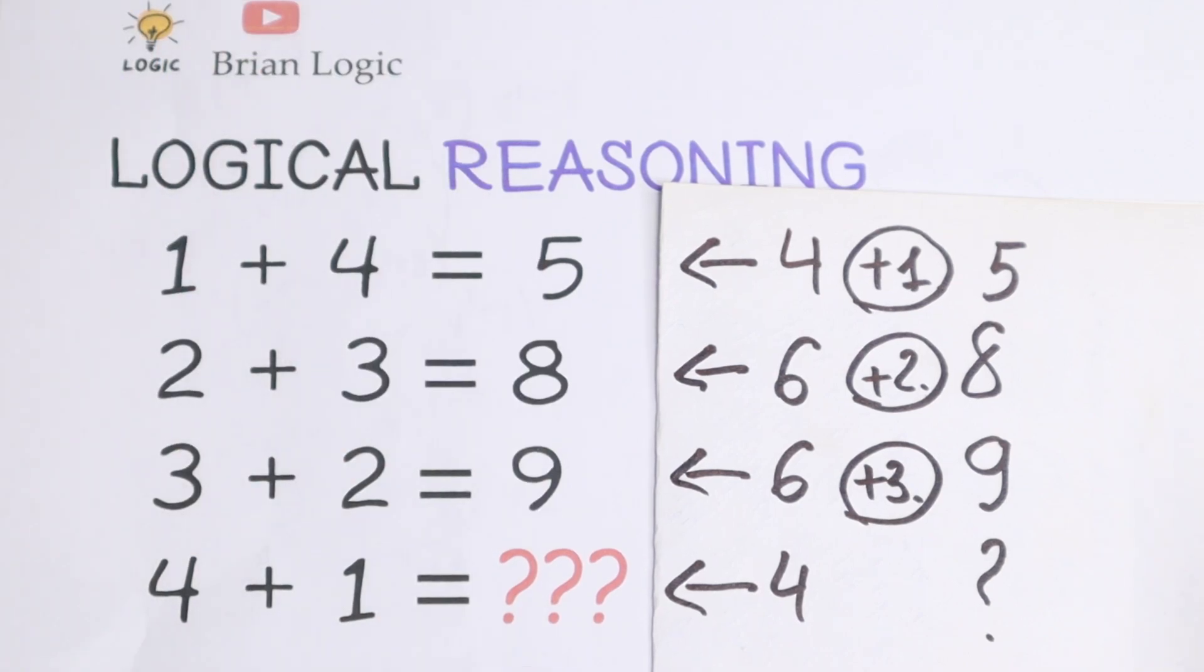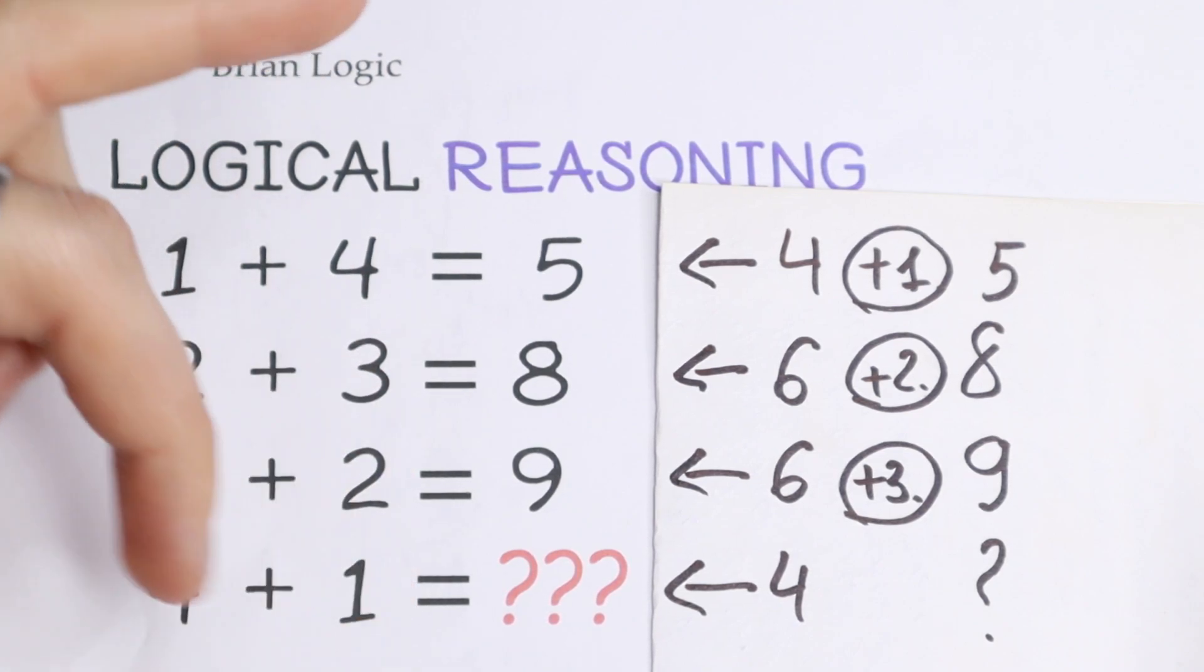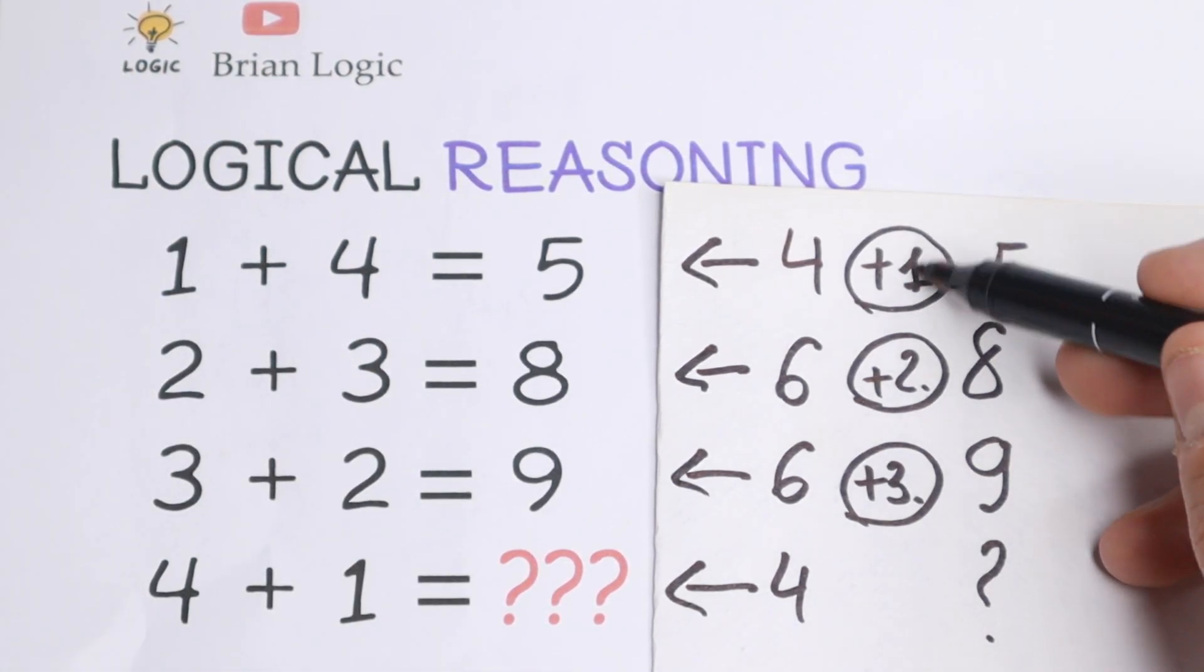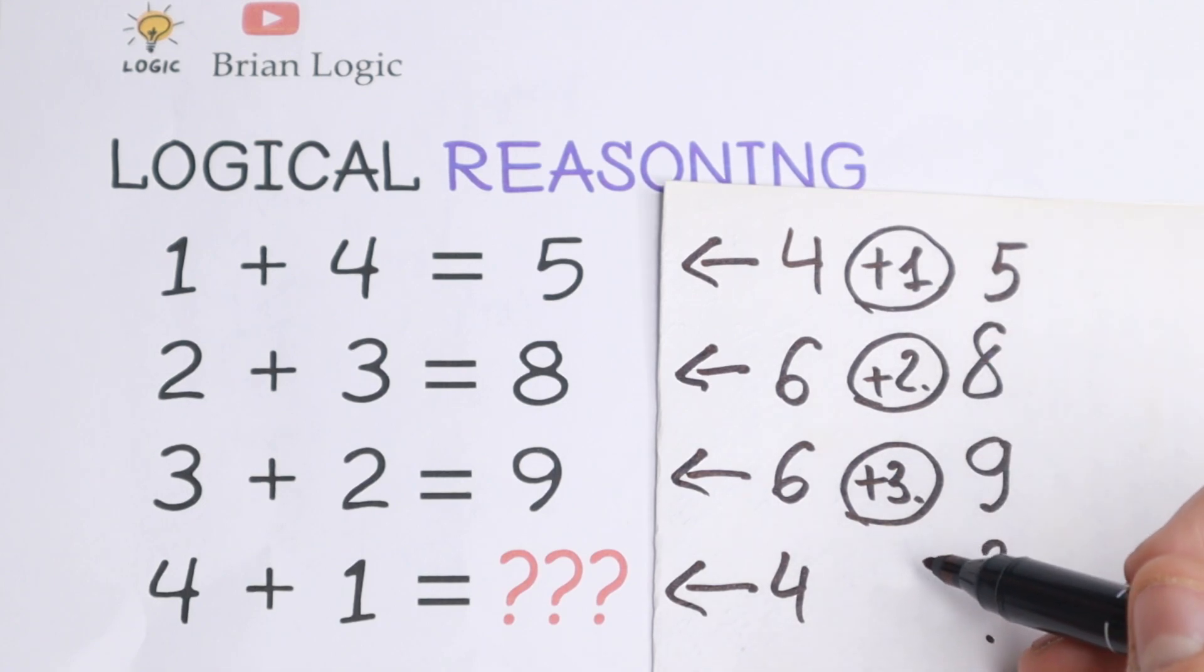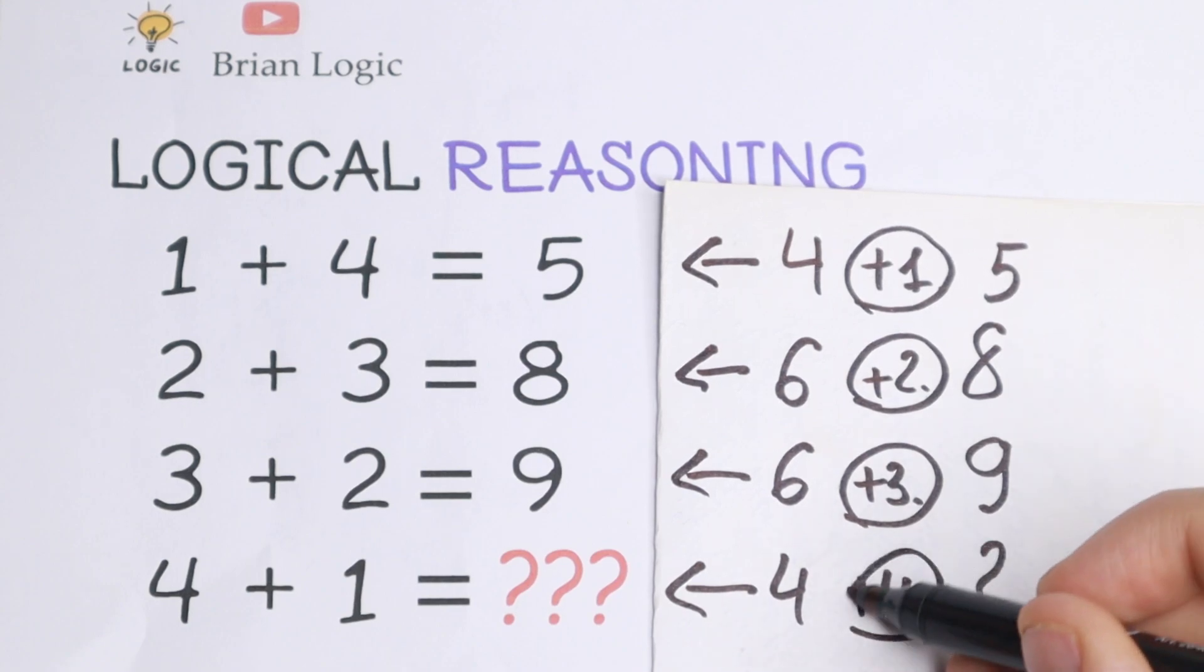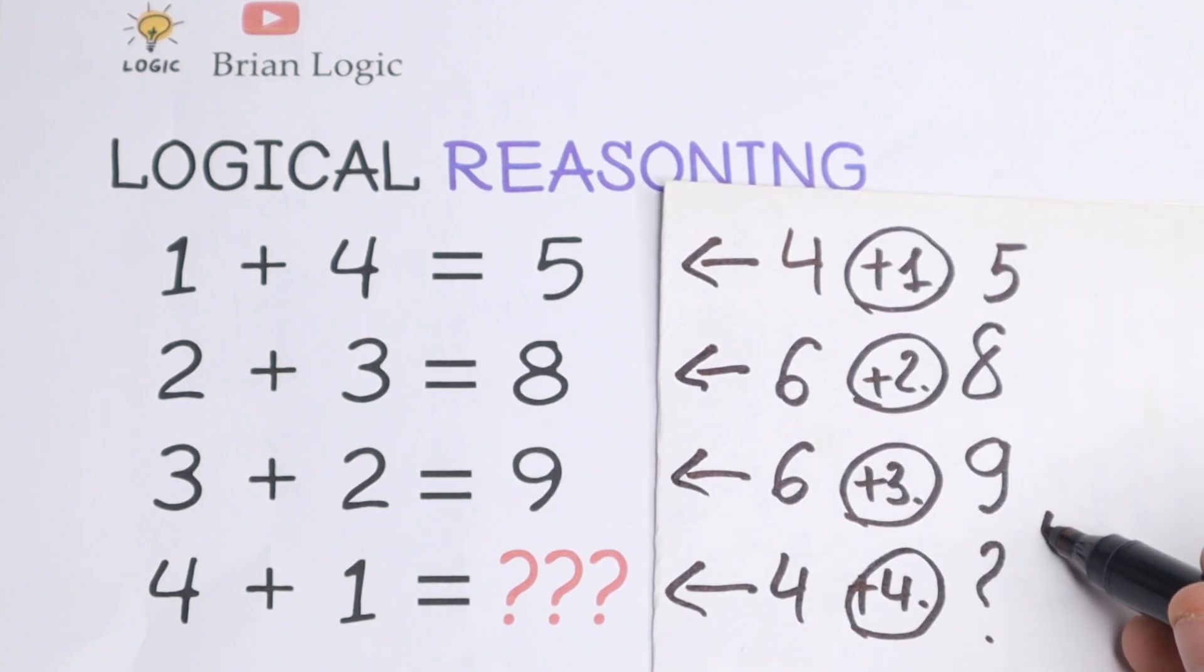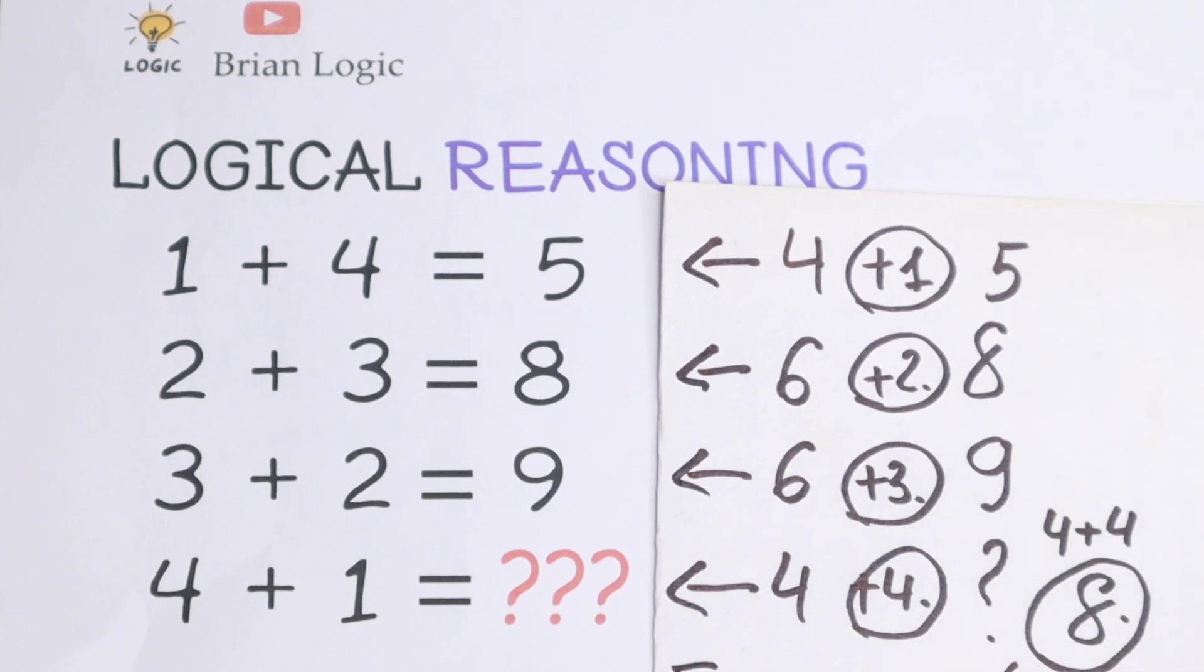So the pattern between all of these rows is multiplying the first two digits. And we have a natural order: firstly add 1, add 2, add 3, and of course in the last case we need to add 4 because this is the pattern between all of these numbers. And 4 plus 4 will be our last number, we are talking about 8. So our answer will be 8.